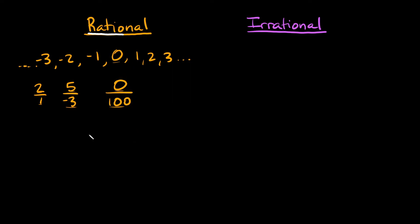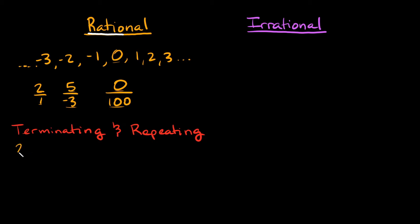Another type of rational number is decimals — but specific kinds: terminating and repeating. A terminating decimal like 2.5 is a rational number because it ends and doesn't go on forever. I can rewrite it as a ratio of two integers: 25 over 10. Since 25 and 10 are both integers, 2.5 is a rational number.